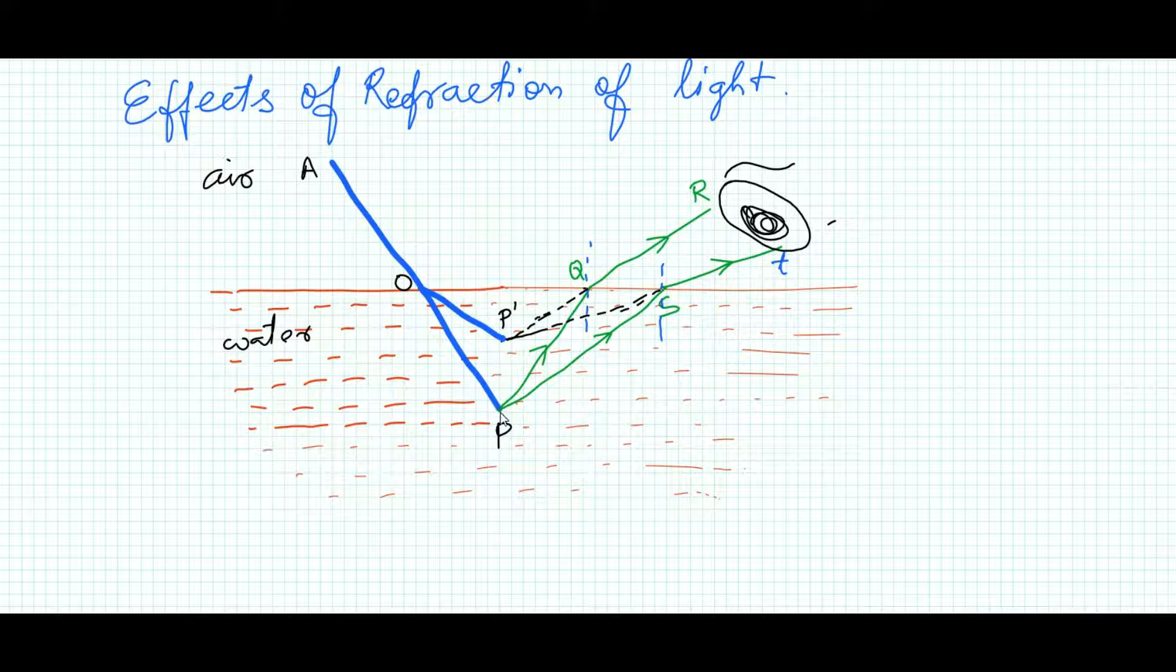I have shown here only two rays of light, but it is not the actual case. Actually, many rays of light emanate from all parts of this stick. The rays of light that strike our eye, if we extend them backwards, will all meet at point P′. Due to this, the stick AP appears bent at point O.